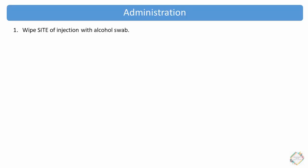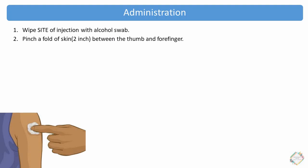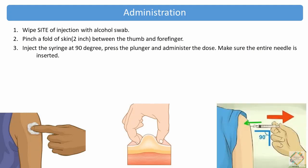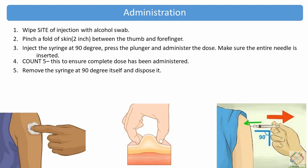For administration, first wipe the injection site with an alcohol swab. Pinch a fold of skin two inches between the thumb and forefinger. Inject the syringe at 90 degrees, press the plunger, and administer the dose. Make sure the entire needle is inserted, then count to 5 to ensure the complete dose has been administered. Remove the syringe at 90 degrees and dispose of it.